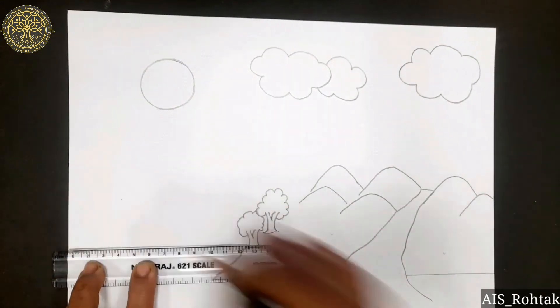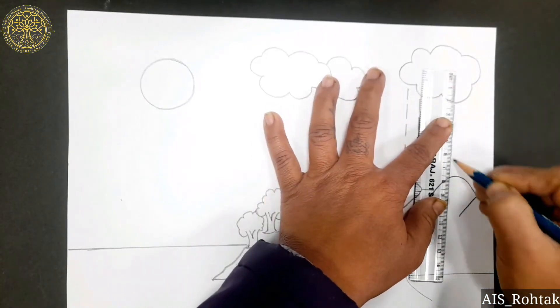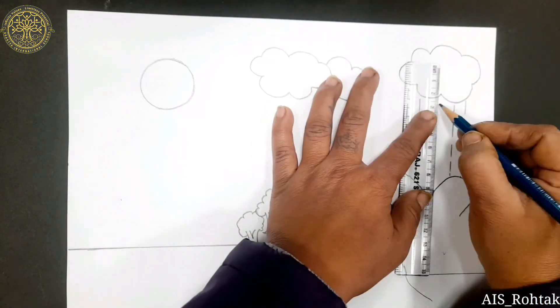Now start drawing arrows from the clouds. We are showing the rain in this way.